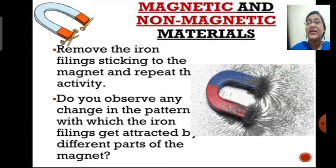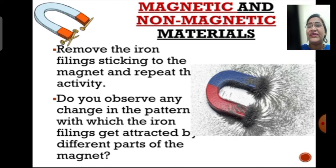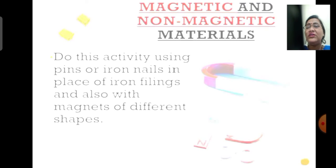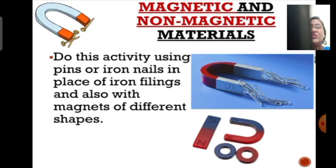Why is this so? Try to repeat the activity a few times and notice whether there are any changes in the pattern in which iron fillings get attracted by different parts of the magnet. If you do not have iron fillings at home, you can try this activity using metal paper clips, safety pins, or iron nails. You can also use different shapes of magnets and repeat it a few times to observe any change in the pattern.